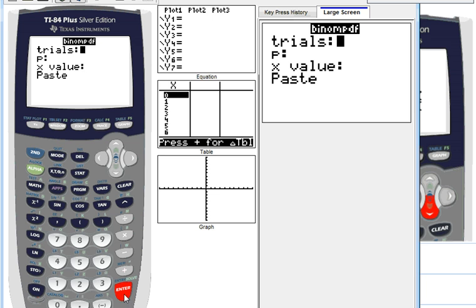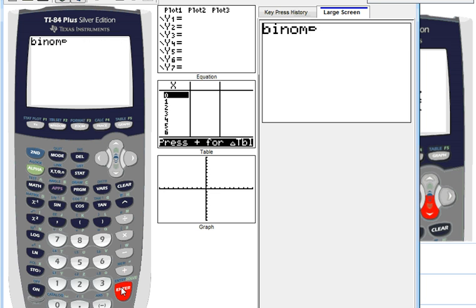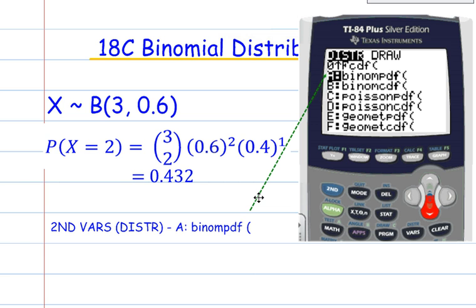It's very clear, you just fill it in, so 3 was the number of trials, 0.6 is our probability, and the value we're looking for is x being equal to 2. And it populates it all for you, and you can see it will give me 0.432. And you can use either method. So, again, that's in the 2nd VARS, which is the distribution menu, and it was a binomial PDF.